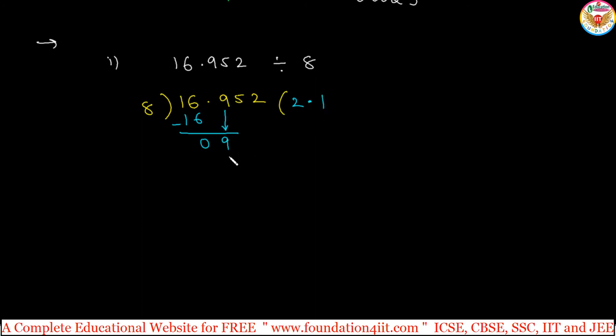So 8 times 1 is 8, subtract gives 1, bring down 5. 8 times 1 is 8, subtract gives 7. Next place is the 2. So 8 times 9 is 72, remainder 0. The only thing is when you take the digits after the decimal point, keep the point here also in the quotient place.